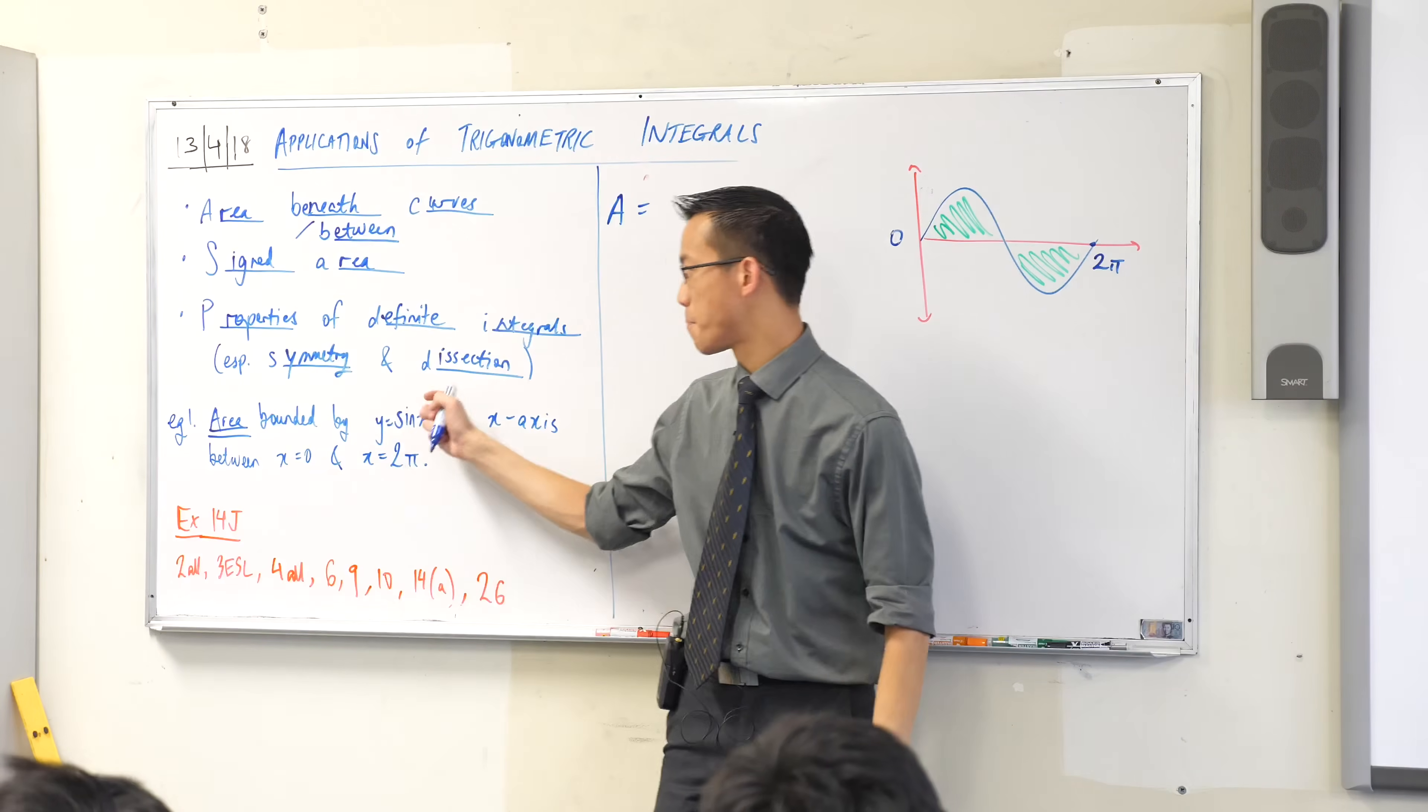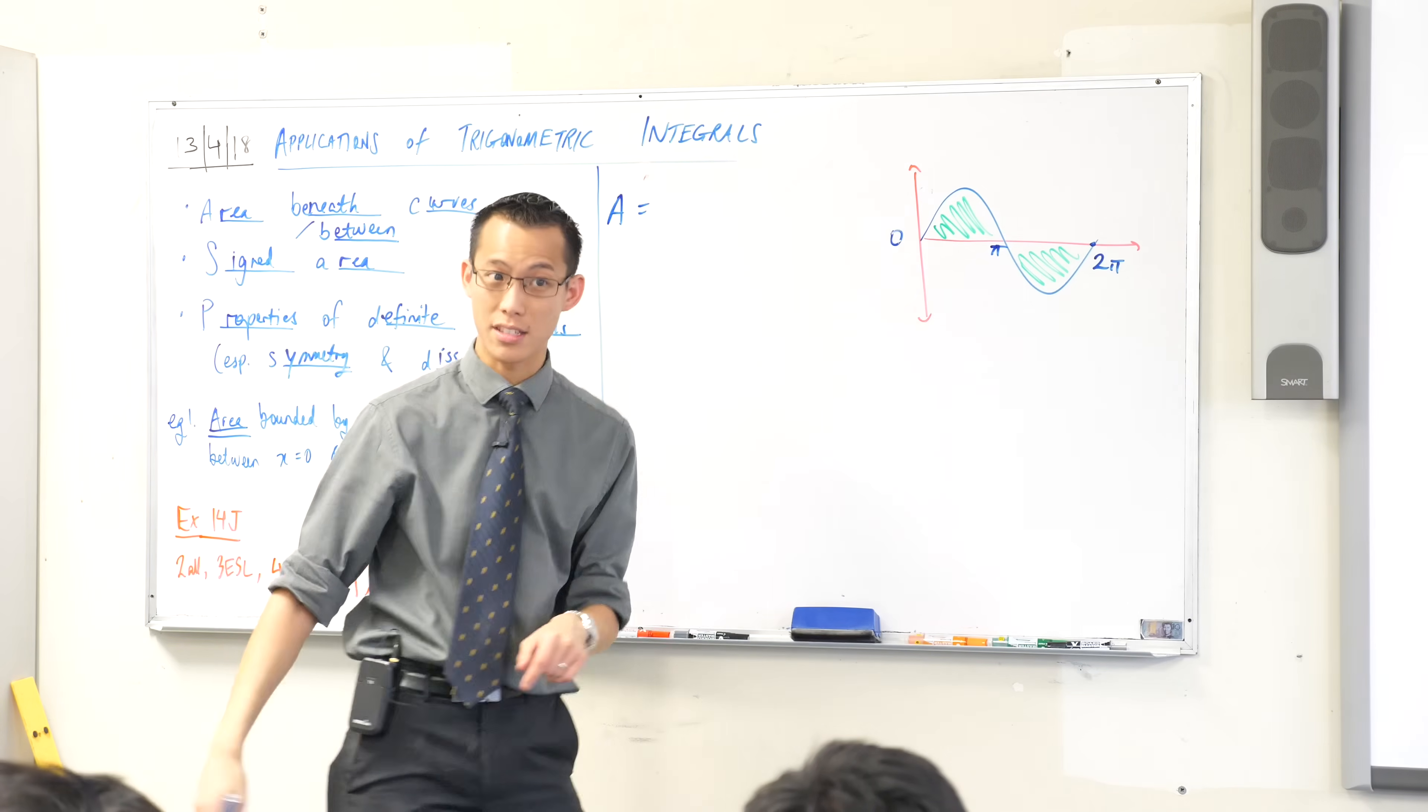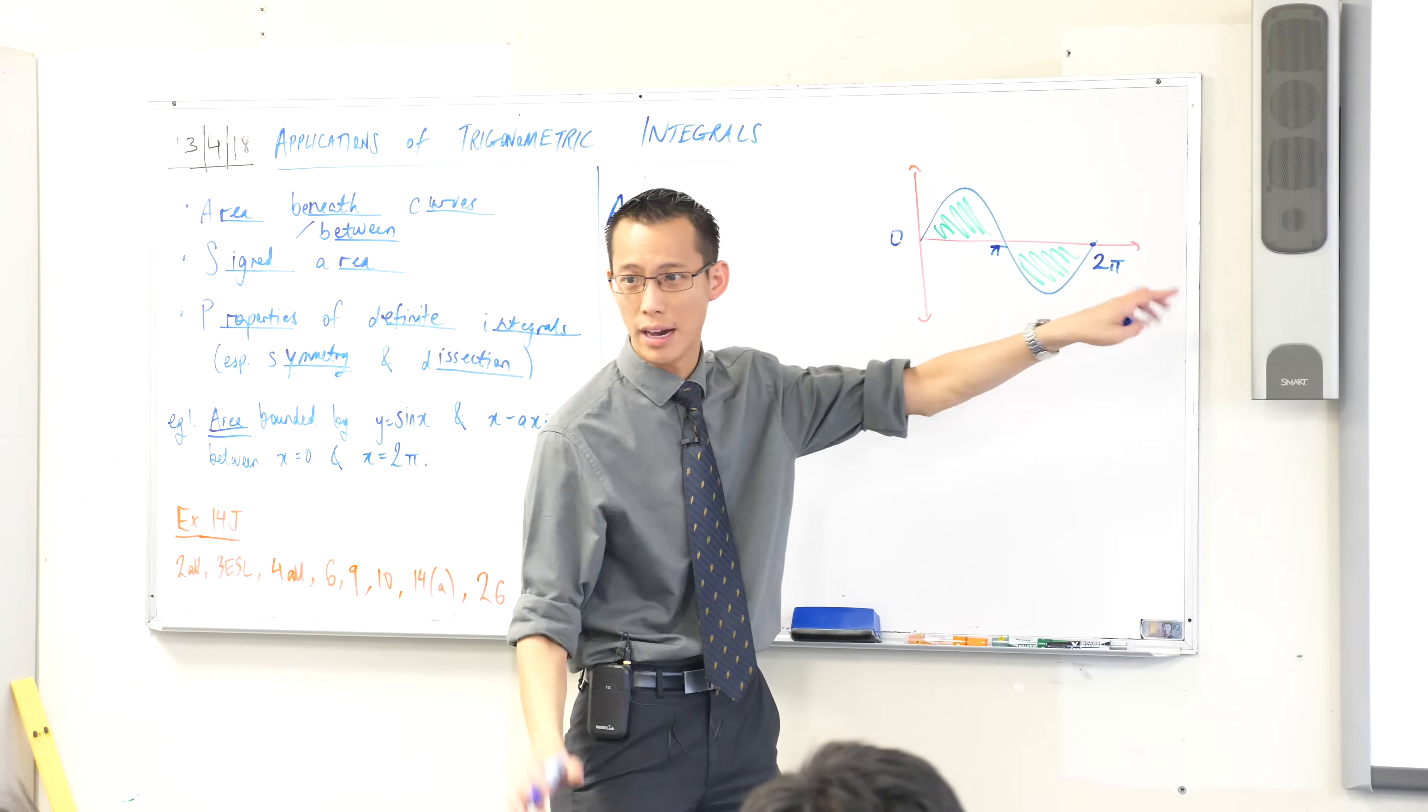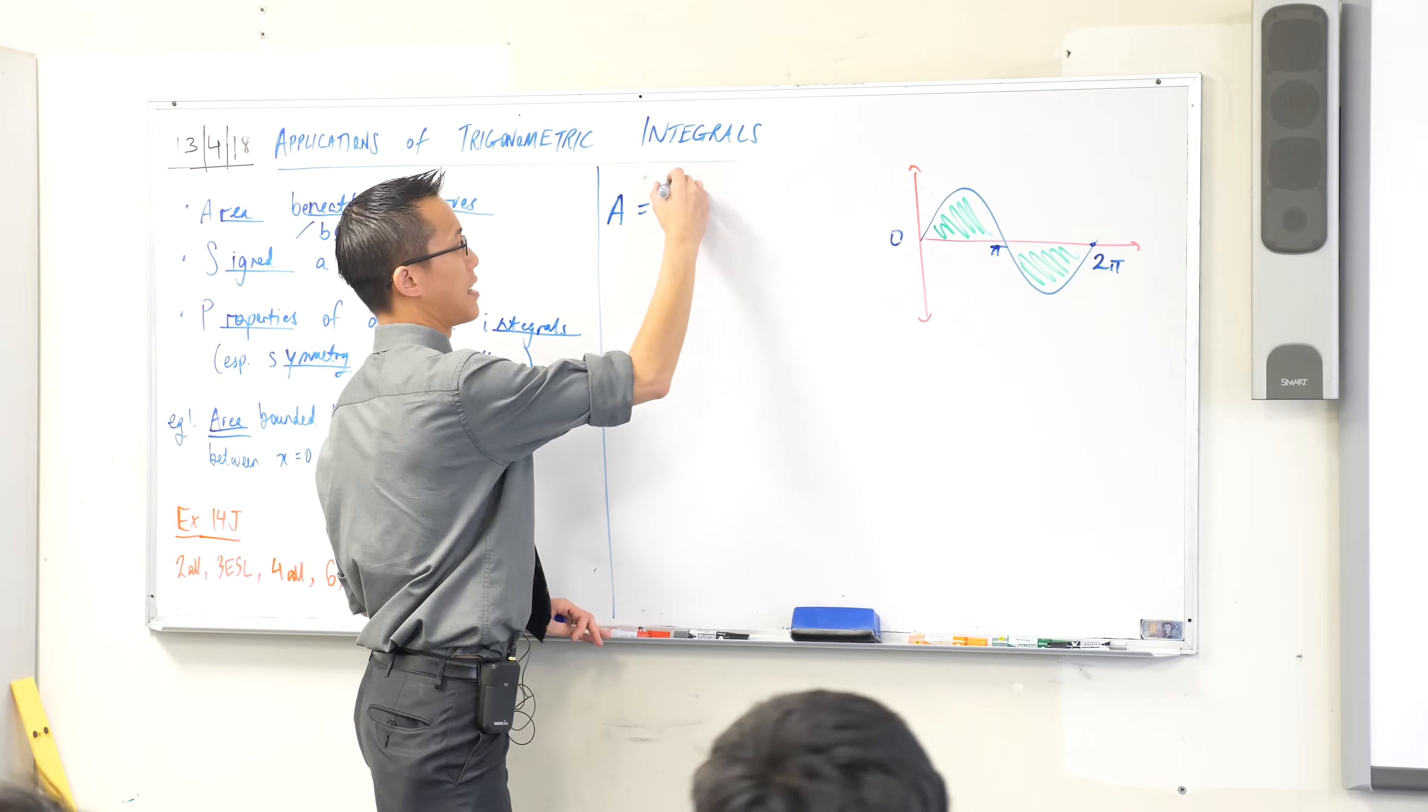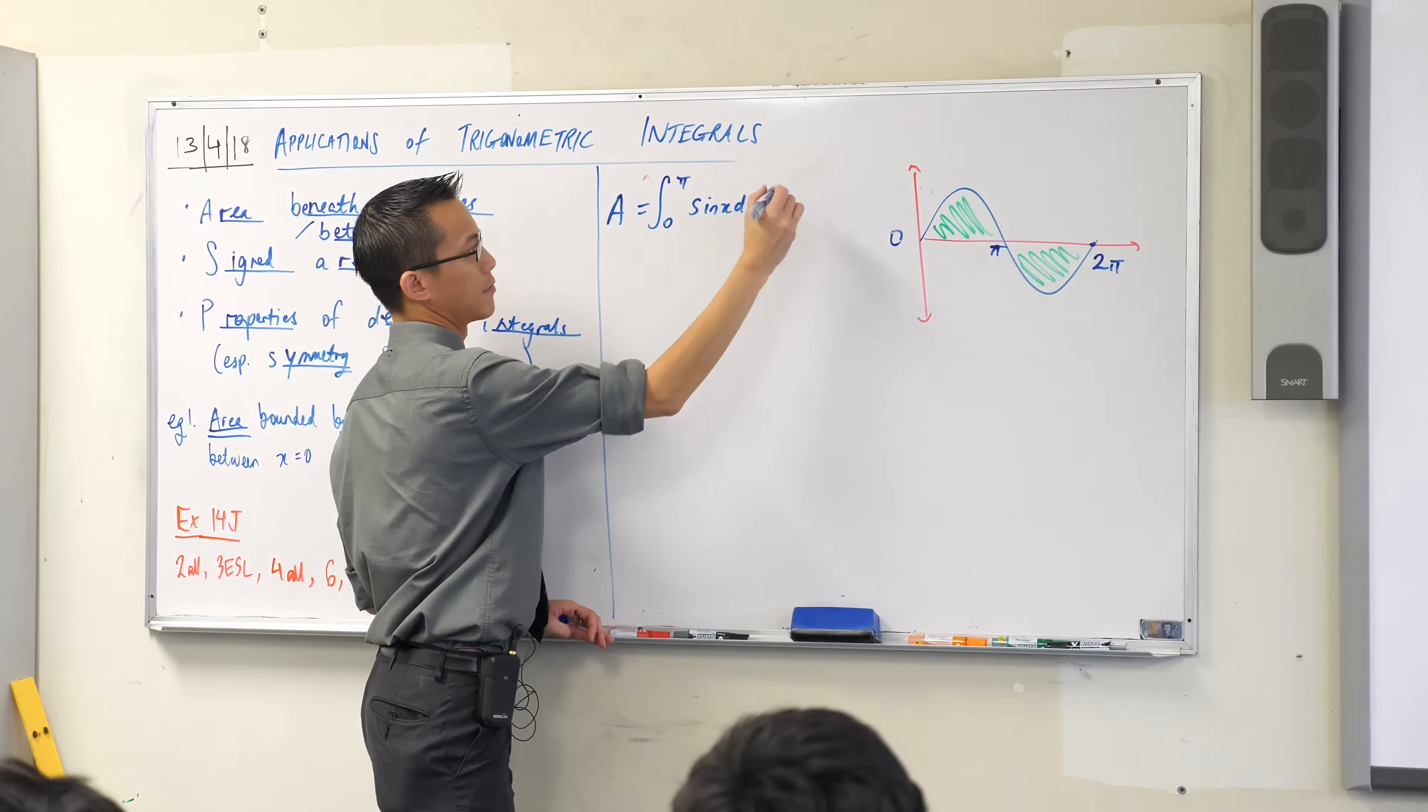I'm going to dissect this into two separate integrals, from 0 to π, that's the positive part, and then π to 2π. Is that okay? So let's write this out. 0 to π, I've got enough space.